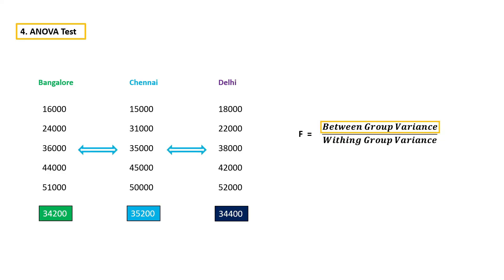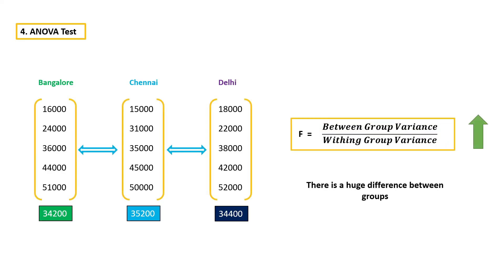In ANOVA, we calculate between-group variance and divide it by within-group variance. If the F value is high, it indicates that there is a huge difference between groups, so that feature is important. And if the F value is less, it indicates that there is not much difference between groups, so that feature may not be important.